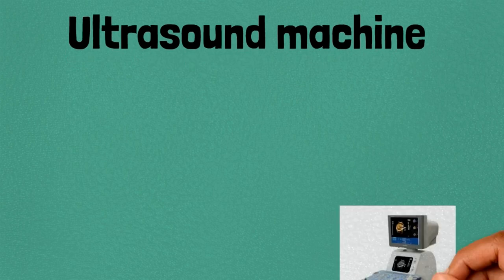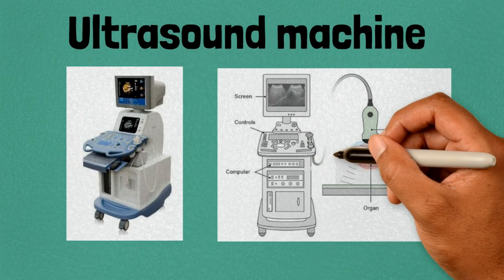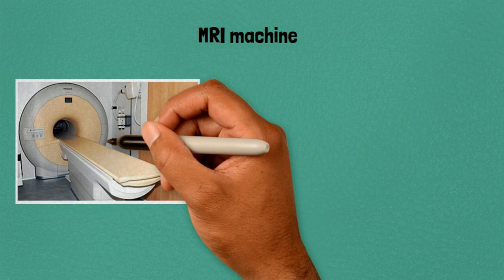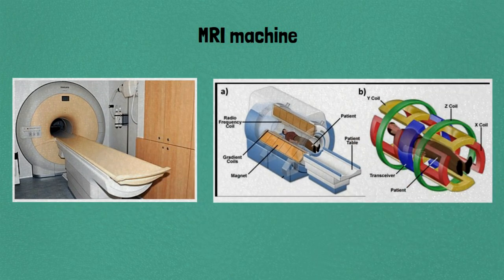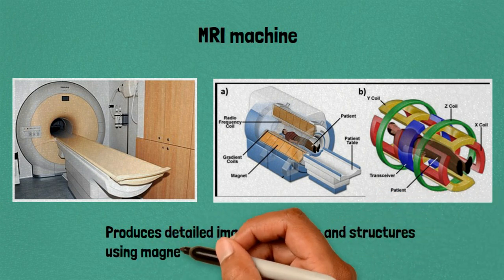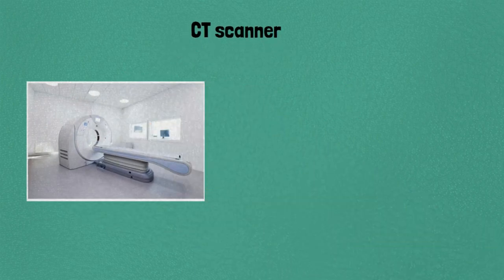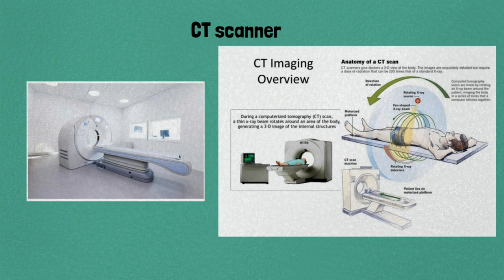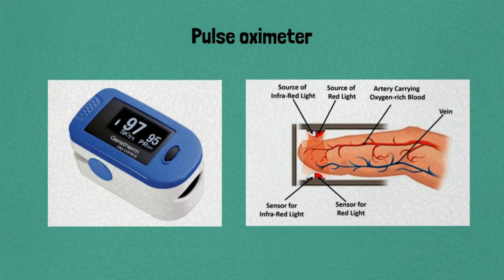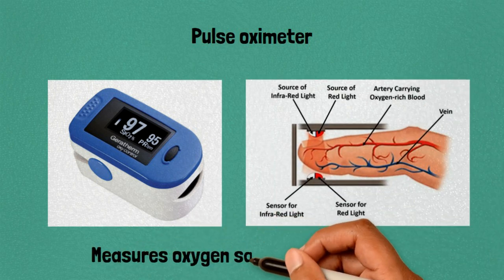Six: ultrasound machine, uses sound waves to visualize organs and tissues. Seven: MRI machine, produces detailed images of organs and structures using magnetic fields and radio waves. Eight: CT scanner, creates detailed cross-sectional images of the body. Nine: pulse oximeter, measures oxygen saturation in the blood.